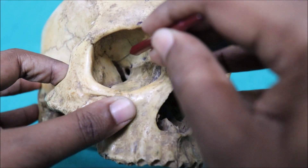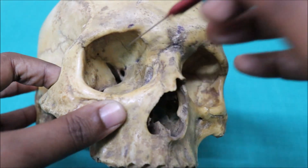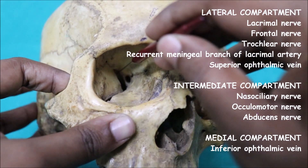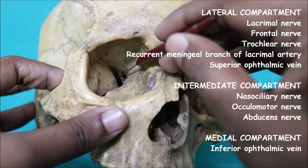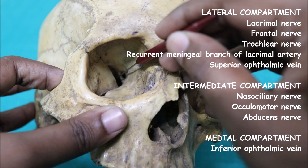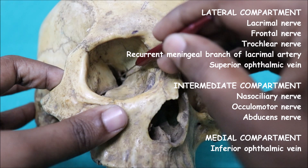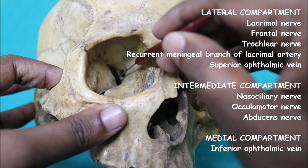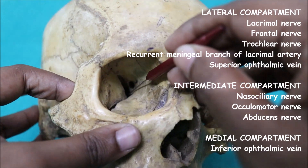Through the common tendinous ring, the superior orbital fissure is divided into three compartments: a lateral compartment, an intermediate compartment, and a medial compartment. Through the lateral compartment pass the lacrimal nerve, frontal nerve, trochlear nerve, superior ophthalmic vein, and recurrent meningeal branch of the lacrimal artery. Through the intermediate compartment, which lies within the ring, pass the upper and lower divisions of the oculomotor nerve, the nasociliary nerve between them, and the abducens nerve below and lateral to the lower division of the oculomotor nerve. Through the medial compartment passes the inferior ophthalmic vein.